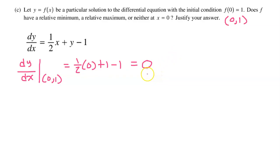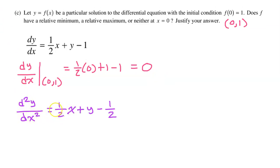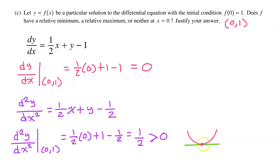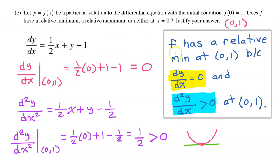Next, we evaluate the second derivative at (0, 1). From Part B, the second derivative expression evaluated at (0, 1) gives one-half, which is positive. Since the first derivative is zero, we have a horizontal tangent line, and since the second derivative is positive, the function is concave up — indicating a relative minimum. f has a relative minimum at (0, 1) because the first derivative equals zero and the second derivative is positive at that point.